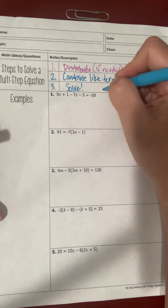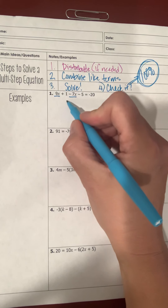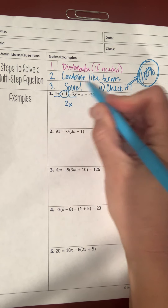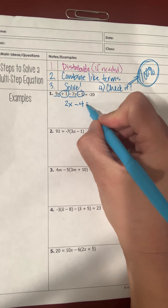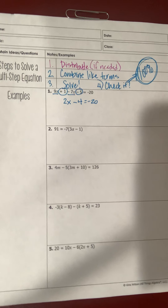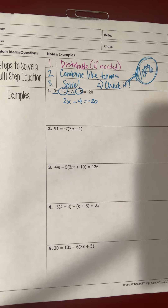Let's look at example one. I always want my variable on the left-hand side. I can't distribute because there are no parentheses, so I combine like terms first. 9x and negative 7x is 2x; positive 1 and negative 5 is negative 4, and I set that equal to negative 20.